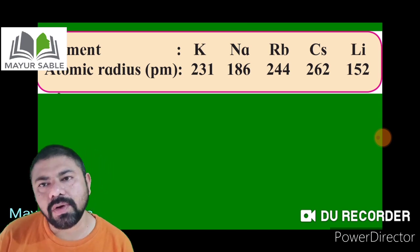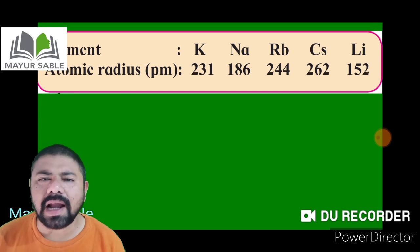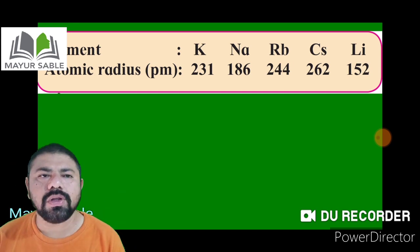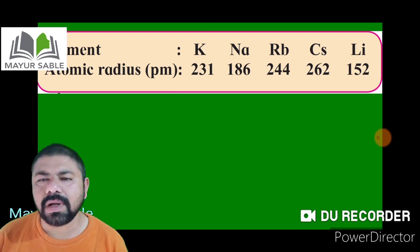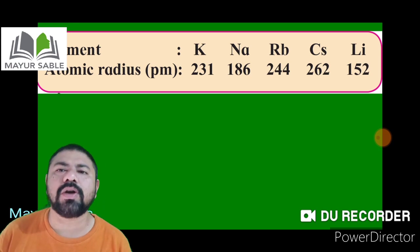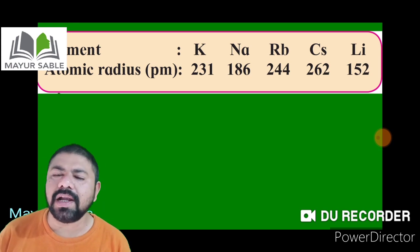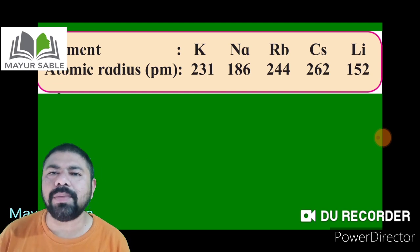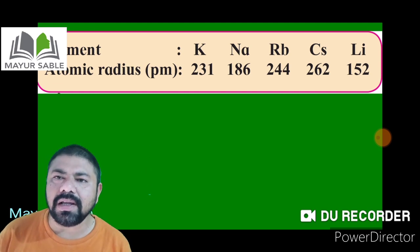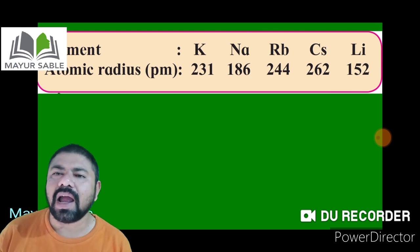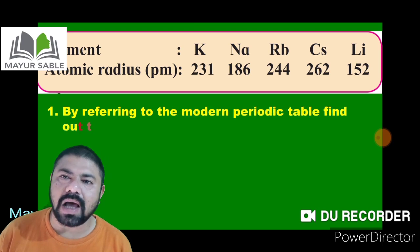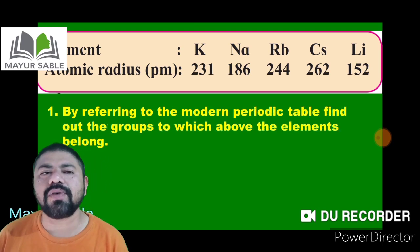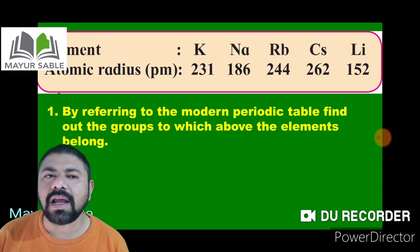Now we study the periodic trend of atomic radius according to a group. The elements given are: potassium (231 pm), sodium (186 pm), and lithium (152 pm), along with rubidium and cesium. These five questions from the activity will also be answered for group trends.